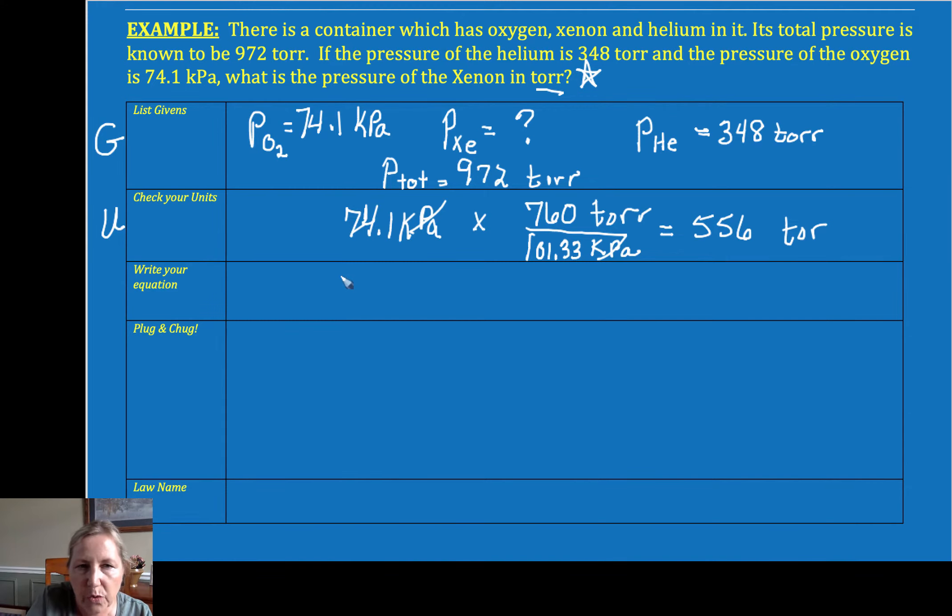Now I can write my equation. My P_total is the sum of the individuals, the oxygen, plus the xenon, plus the helium. This is Dalton's law. These people are important and made important contributions to our understanding of science.